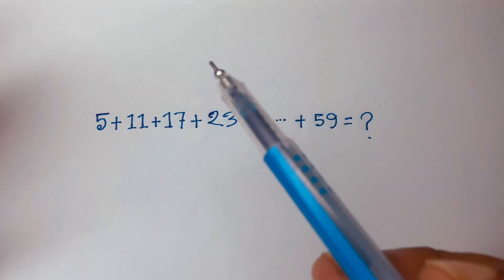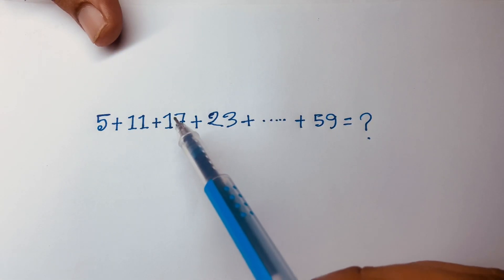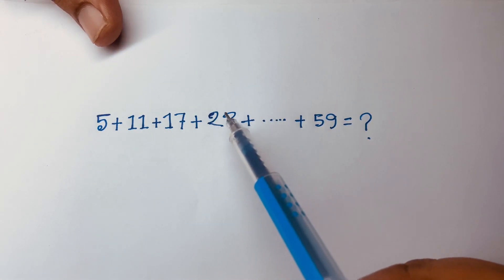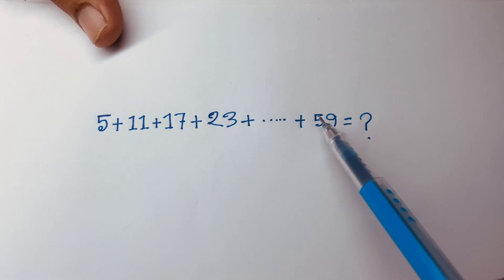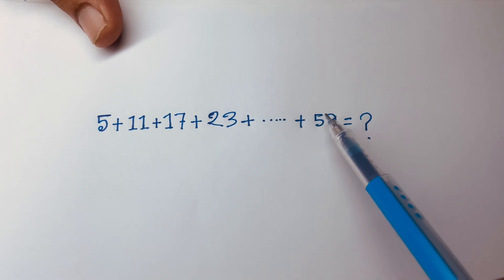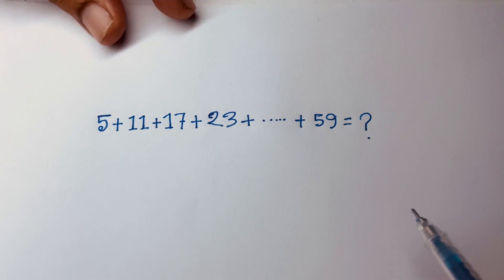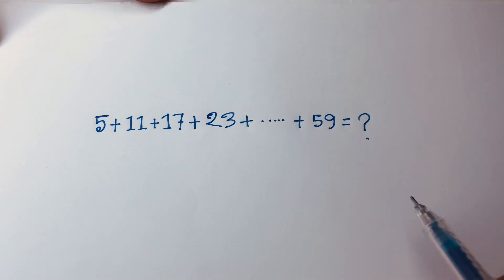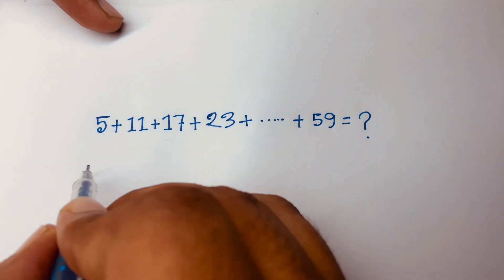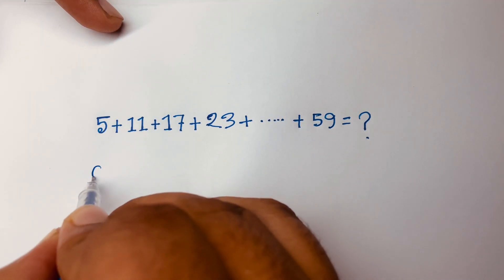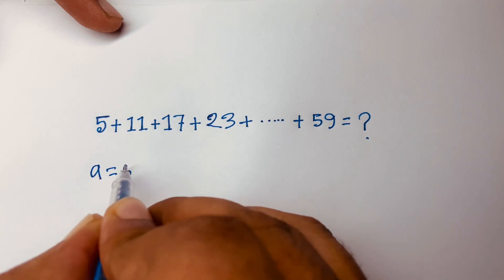To solve this math question: 5 plus 11 plus 17 plus 23 plus ... and the last number is 59. What is the sum equal to?